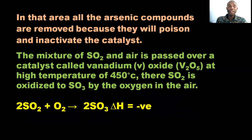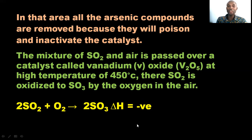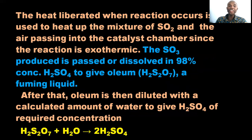The mixture of sulfur dioxide and air is passed over a catalyst, vanadium pentoxide, at a high temperature of 450 degrees Celsius. The sulfur dioxide is then oxidized to sulfur trioxide. The equation for the reaction can be seen here, and it is exothermic. The heat liberated by the reaction is used to heat up the mixture of sulfur dioxide and air passing into the catalyst chamber.